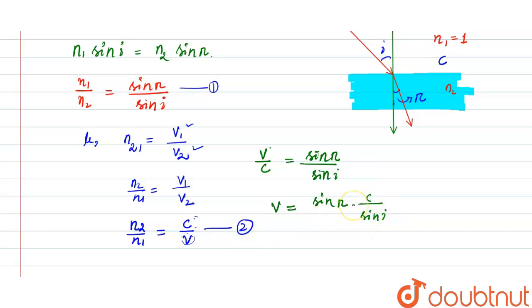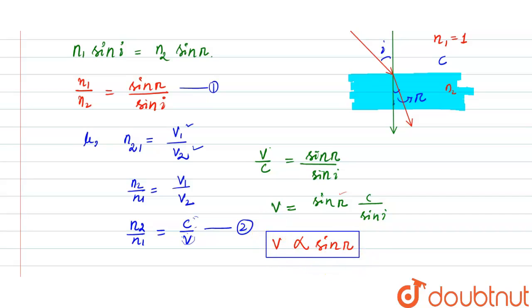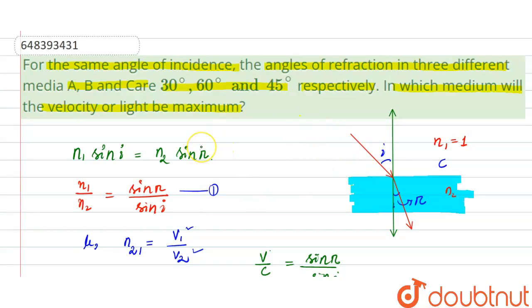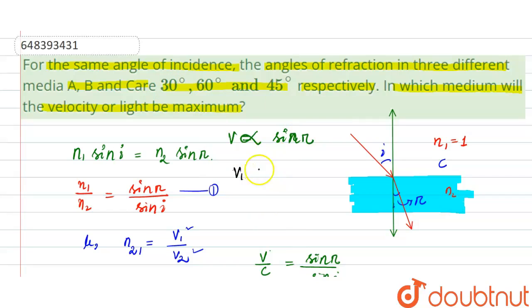Since sin i is constant for all three media (same angle of incidence), the velocity of light in a medium is directly proportional to sin of the angle of refraction. So velocity equals c times sin(r). For medium A with refraction angle 30 degrees: v1 = c × sin 30° = c × 1/2 = c/2.